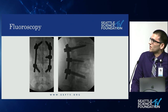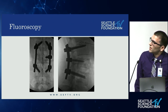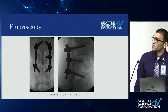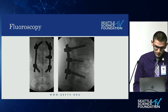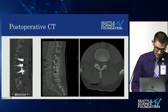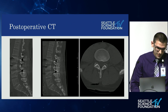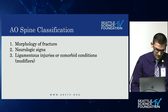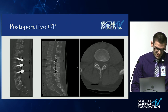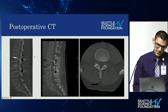Here we have the intraoperative fluoroscopy images. On the left-hand side you can see we did not place a pedicle screw at the L3 level — that was mainly because if we decide to do a subtotal corpectomy down the road, we want to make sure it remains amenable for that. On the post-operative CT scan we had near complete resolution of the retropulsed fragment with good alignment, as shown on the axial view as well.